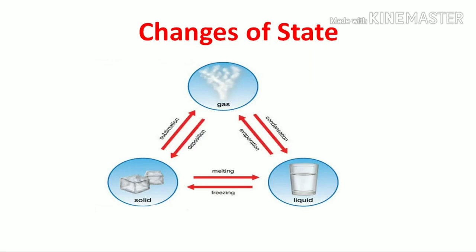Now we are going to look at the changes of state. The diagram shows the process of how each of the matters can change states. For example, gas can change into liquid by condensation, and back to gas by evaporation. We will see some of the definitions of these processes and changes in molecular properties during these processes.